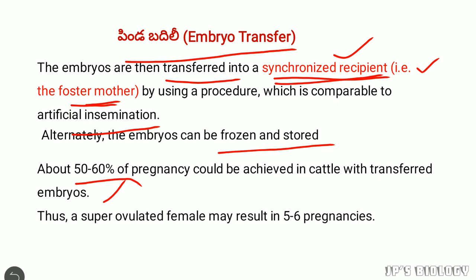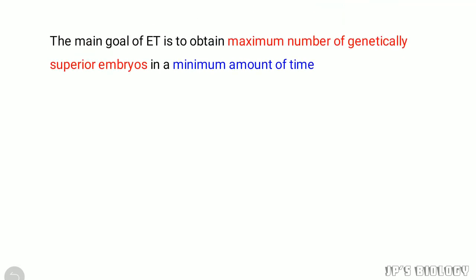About 50–60% of pregnancy could be achieved in cattle with transferred embryos. That is why a super ovulated female may result in 5–6 pregnancies. The main goal of embryo transfer is to obtain the maximum number of genetically superior embryos in the minimum amount of time.